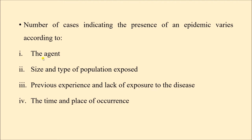The number of cases indicating an epidemic varies according to certain criteria: the type of agent, such as how infective it is and its secondary attack rate; the size and type of population exposed, including previous immunity from vaccination or natural infection; and the time and place of occurrence. All these factors influence how many cases occur and indicate the presence of an epidemic.